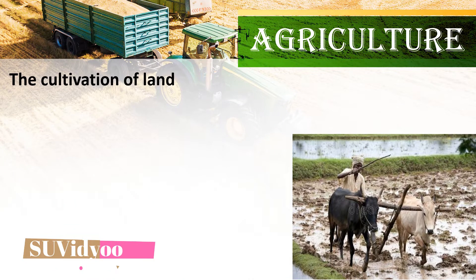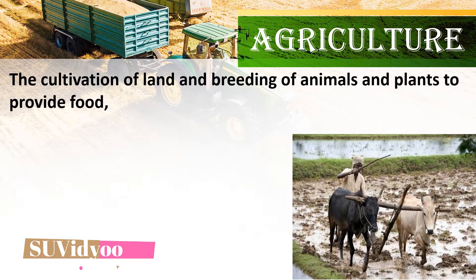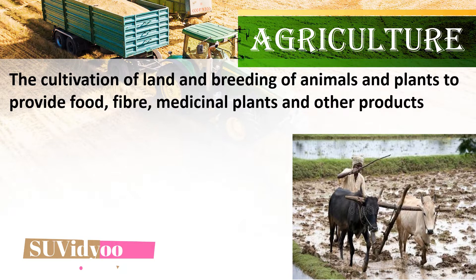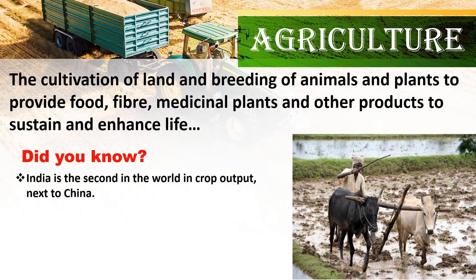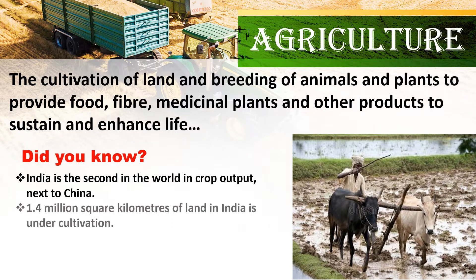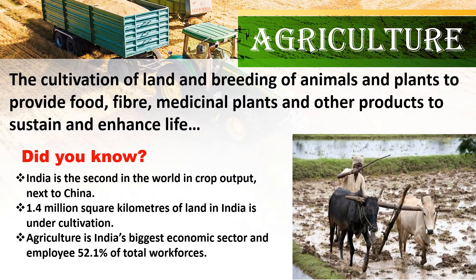The cultivation of land and breeding of animals and plants to provide food, fiber, medicinal plants and other products to sustain and enhance life is known as agriculture. India is the second in the world in crop output next to China. 1.4 million square kilometers of land in India is under cultivation. Agriculture is India's biggest economic sector and employs 52.1% of total workforce.